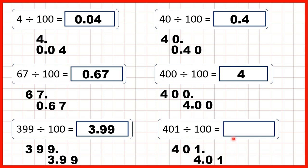Now 401 divided by a hundred. We copy down the decimal point, move the digits two squares across, and we get 4.01. This time we need to remember to include the zero because it's between other digits — it's a placeholder. If we didn't write this zero, the one would be in our tenths column, but we need to show that the one has moved two squares across and is now in our hundredths column. That's why we need a zero in our tenths column.